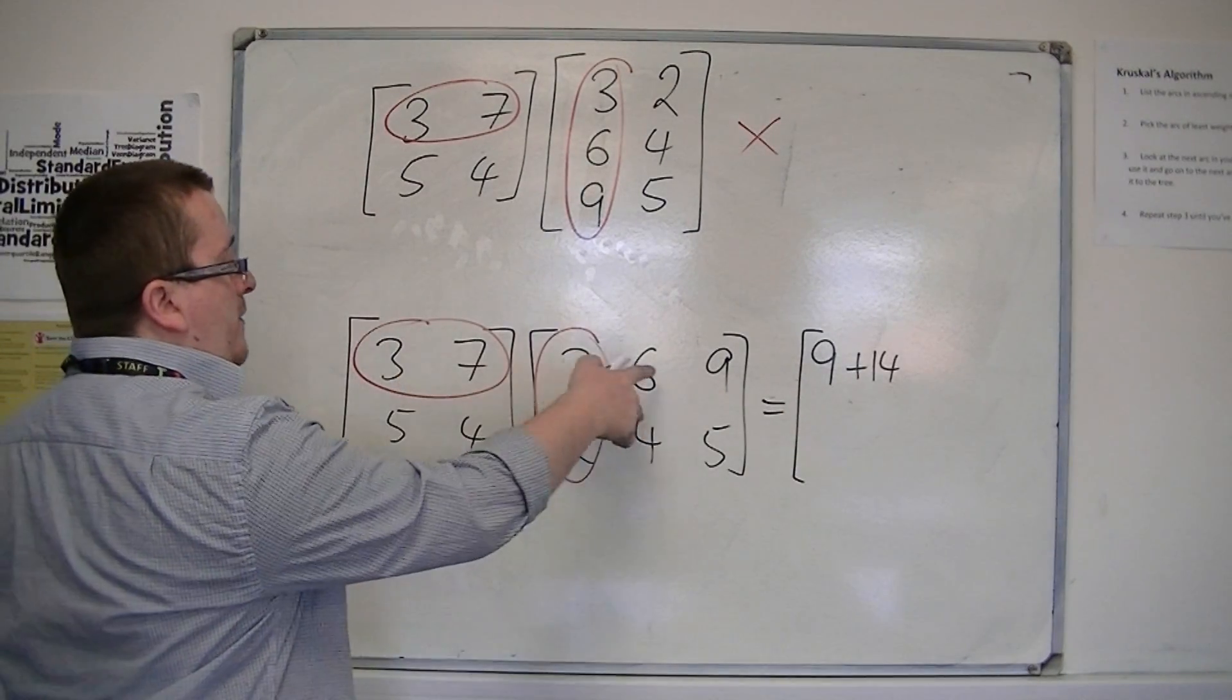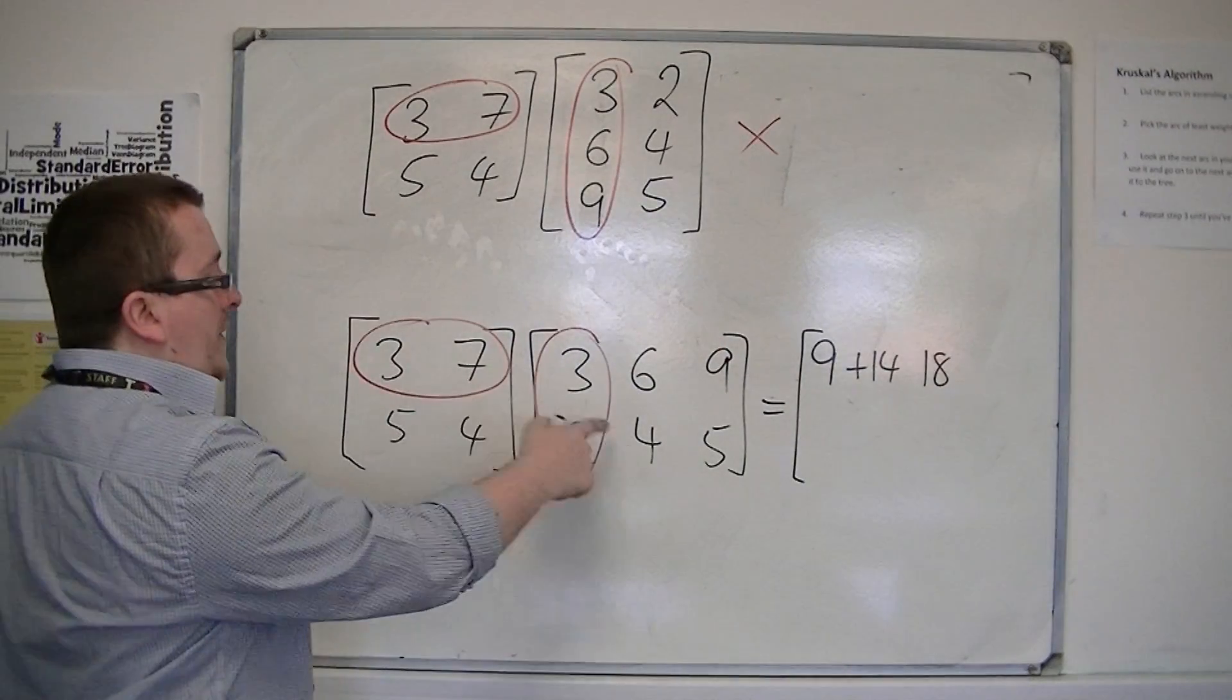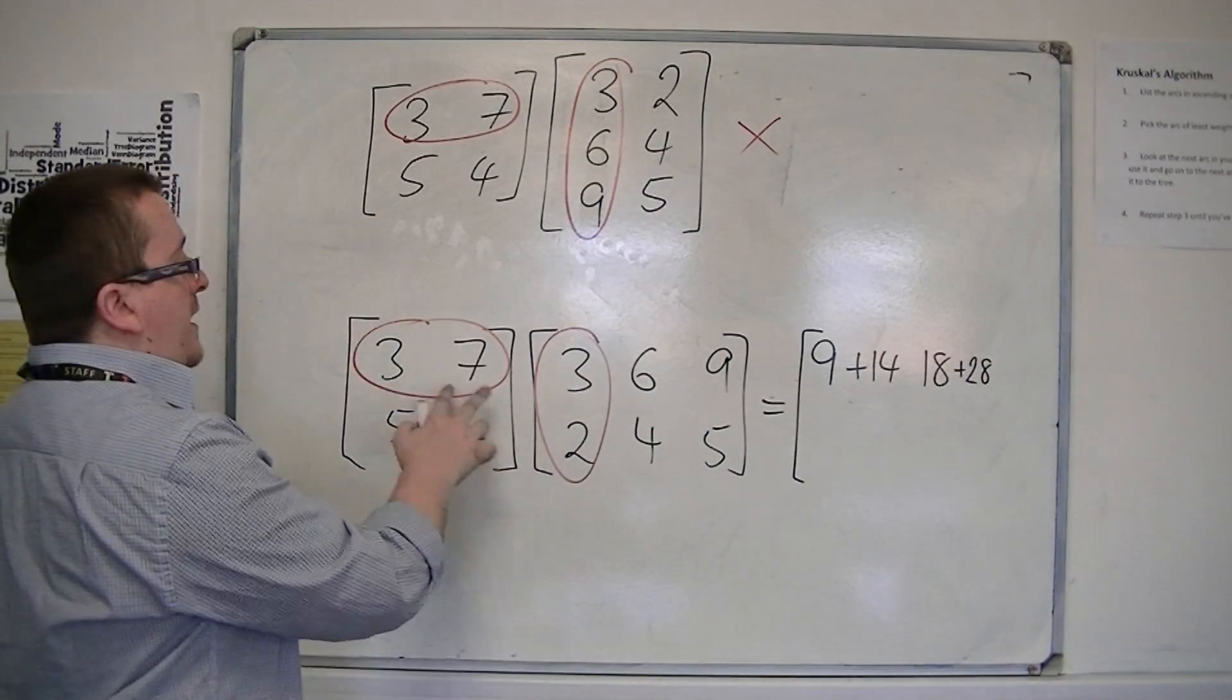Then I've got 3, 7 by 6, 4, so 3, 6 is 18, 7, 4 is 28.